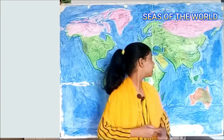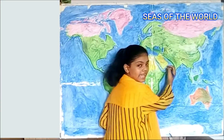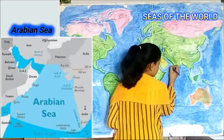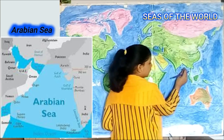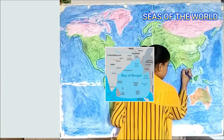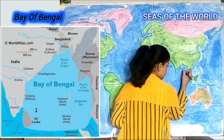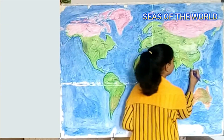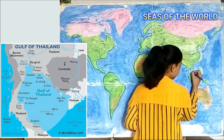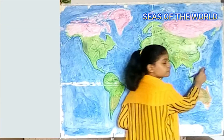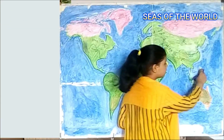Let's see the Seas of the World. Here is Albion Sea. Here is Bay of Bengal. Here is Gulf of Thailand. Here is Philippines Sea.